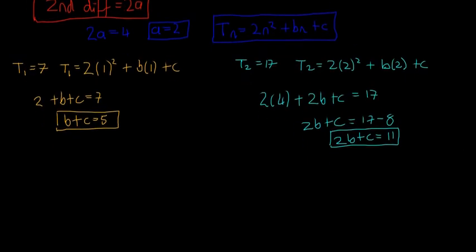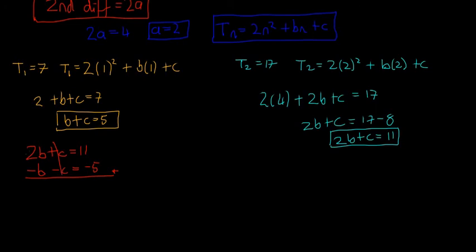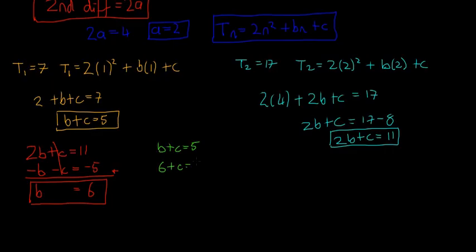Writing the two equations: 2b + c = 11 and b + c = 5. Multiplying the second by −1: −b − c = −5. Adding the two lines, the c terms cancel: b = 6. Substituting back: 6 + c = 5, so c = −1. So a = 2, b = 6, c = −1.